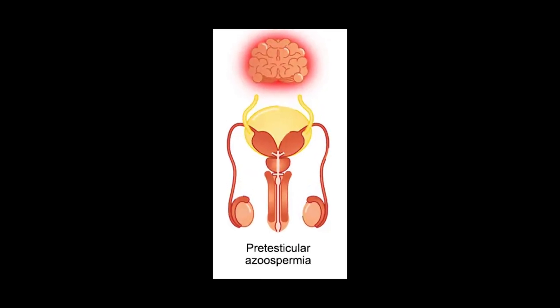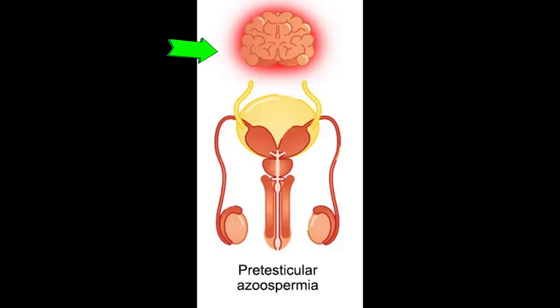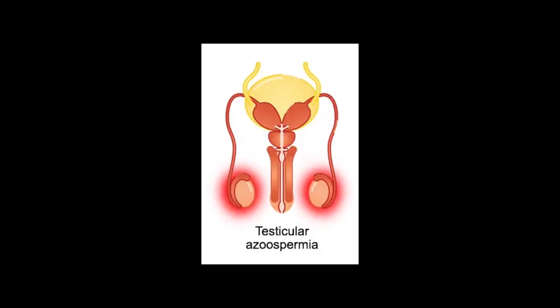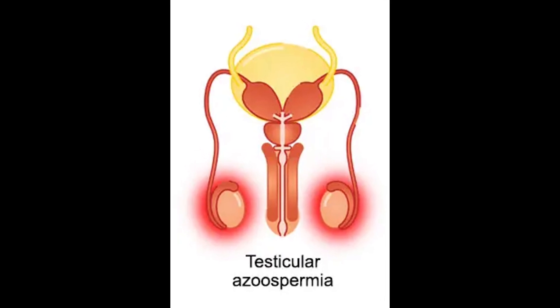Azoospermia has three types. The first is the non-obstructed type, caused by impaired production of hormones and genetic disorders. The second is testicular — damage of the testis — either congenital or due to tumor, radiation, diabetes, surgery, or mumps.